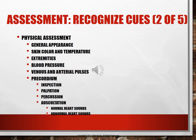Assess general appearance — are they pale or diaphoretic, having difficulty breathing? Check skin color and temperature. If they don't have good cardiac output, their skin will not be pink, warm, and dry — it will be pale to cyanotic, bluish, and cooler.